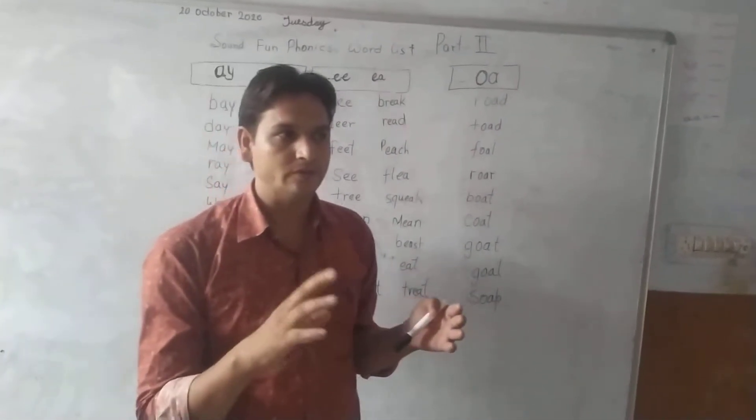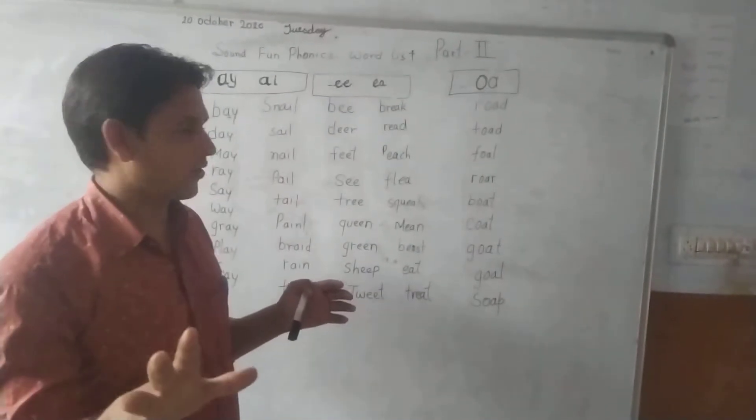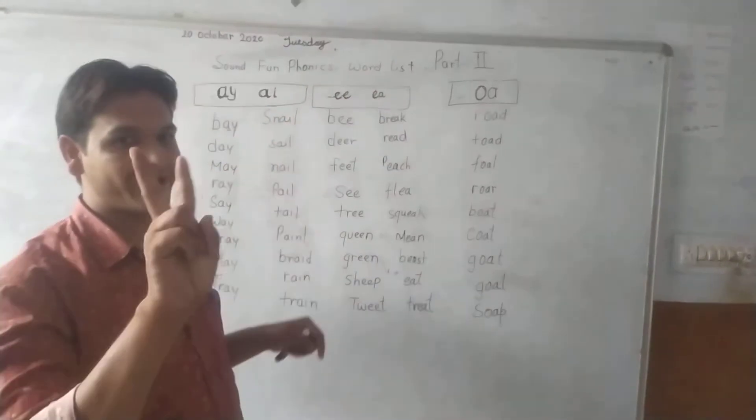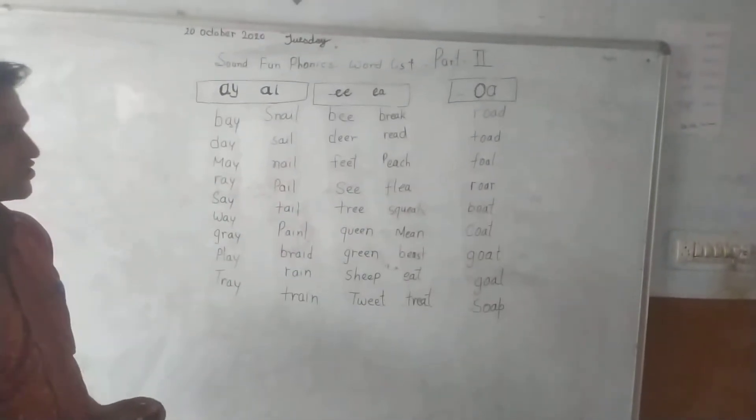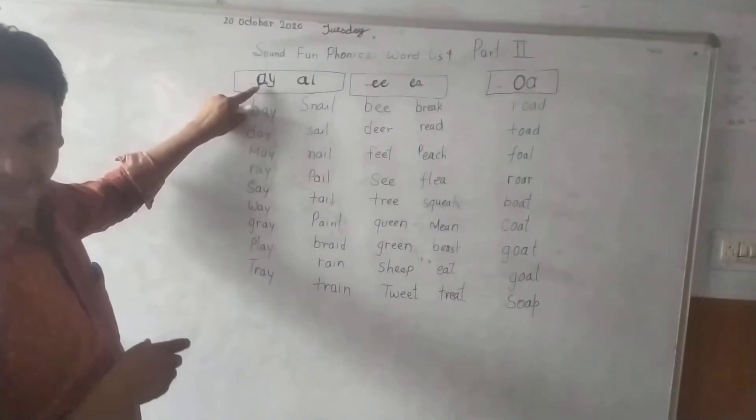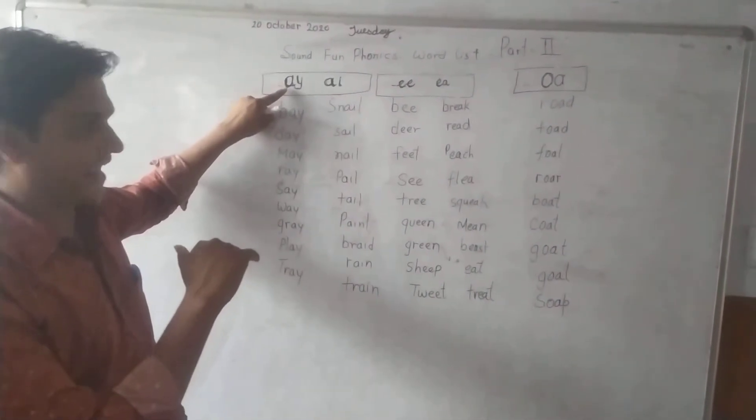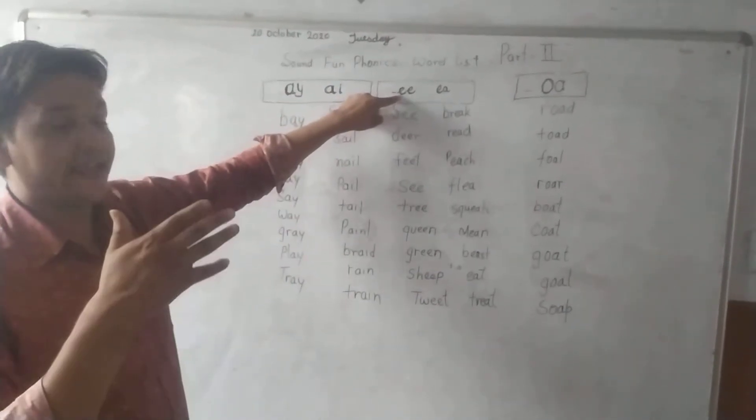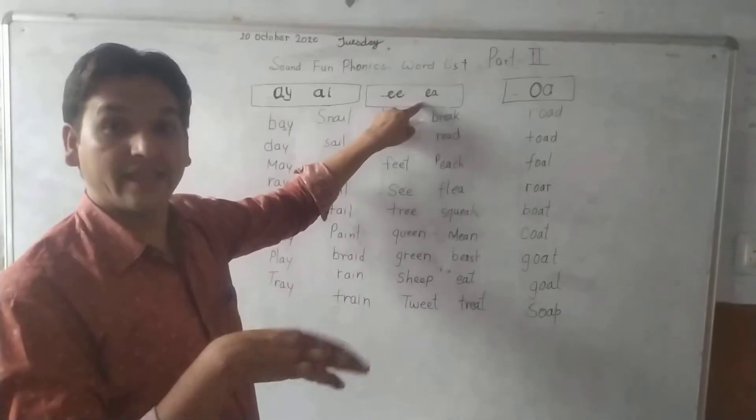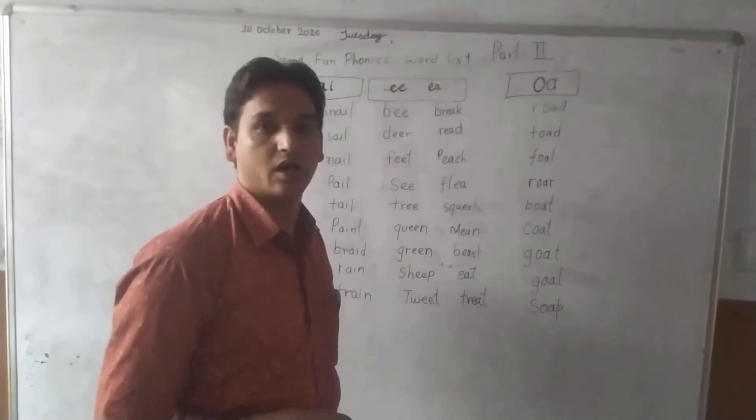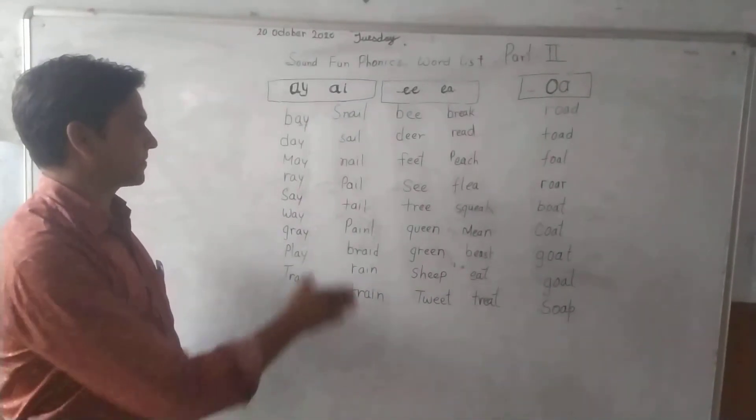So today's topic is Sound Phonic Word List Part 2. Today we will learn AA, EE, and OO sounds. So let's start from here.